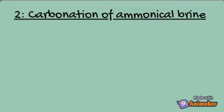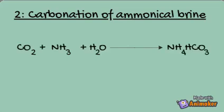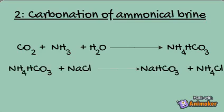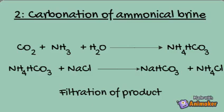After the preparation of ammoniacal brine, it is passed into the Carbonating Tower, where carbon dioxide is passed through it and these reactions take place. Firstly, carbon dioxide, ammonia, and water react to give NH4HCO3. This intermediate product speedily reacts with NaCl brine to form sodium bicarbonate and ammonium chloride. The temperature is lowered to 15 degrees and sodium bicarbonate is obtained, then filtered to reduce impurities.